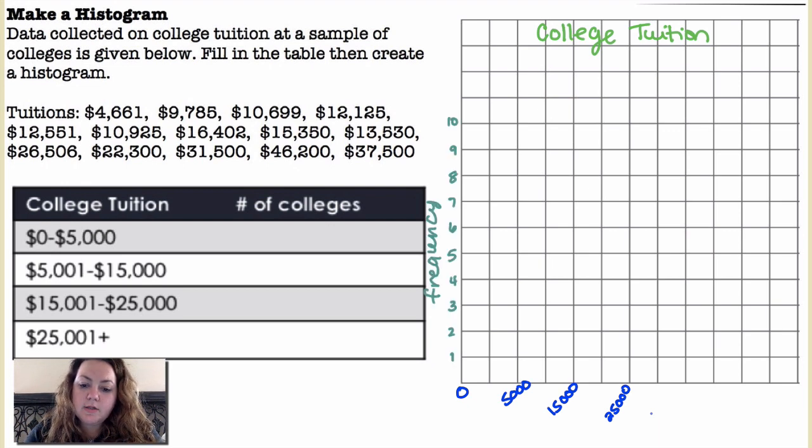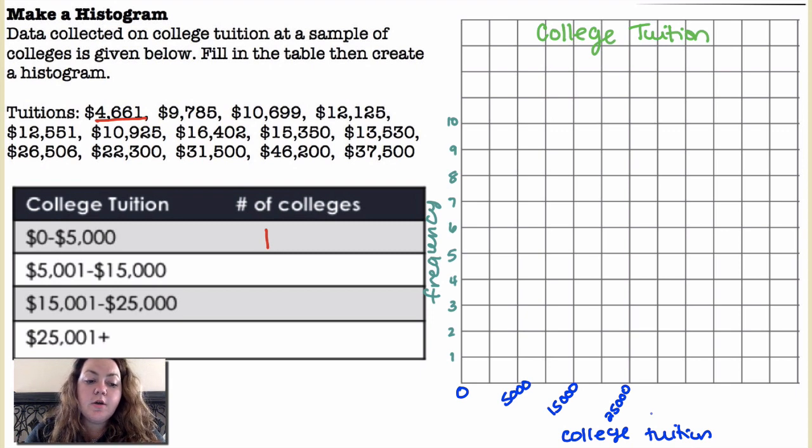And then over here I'm gonna count, this is frequency, down here is the college tuition costs in dollars. So I'm gonna go through this list, the first one was four thousand six hundred and sixty one dollars, well that would fall into the zero to five thousand category and I'm just gonna use tally marks. So then nine thousand seven hundred eighty five falls into the five thousand to fifteen thousand category, ten thousand six hundred and ninety nine falls into the five thousand to fifteen thousand category and I'm gonna keep going just putting a tally mark where those different tuition values belong.